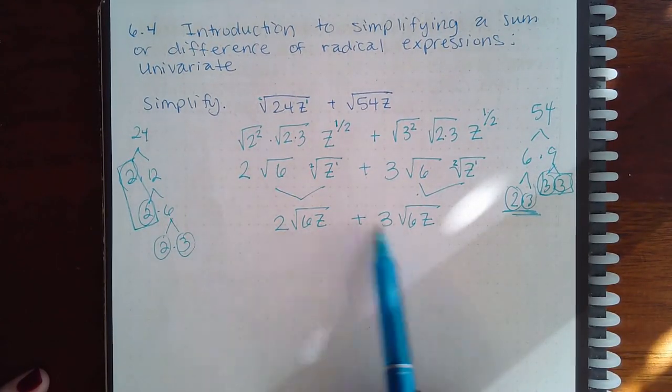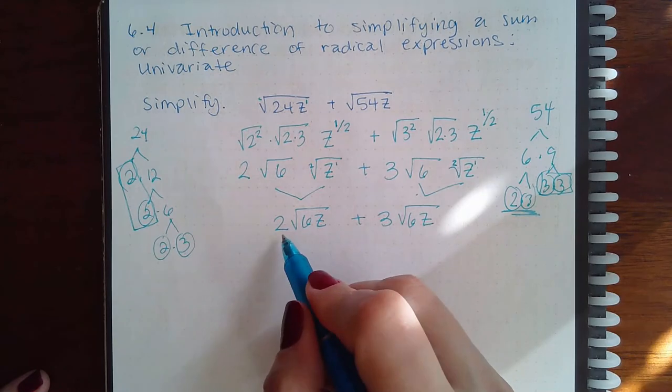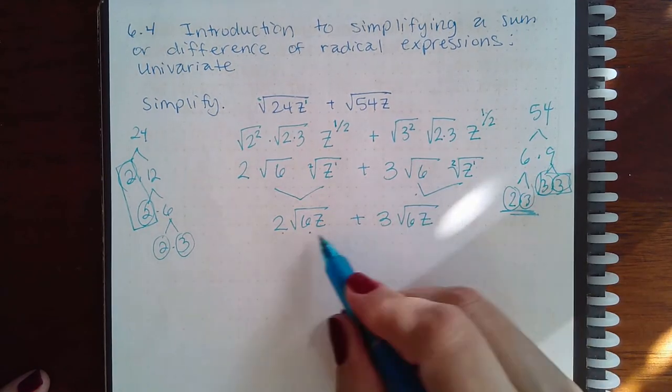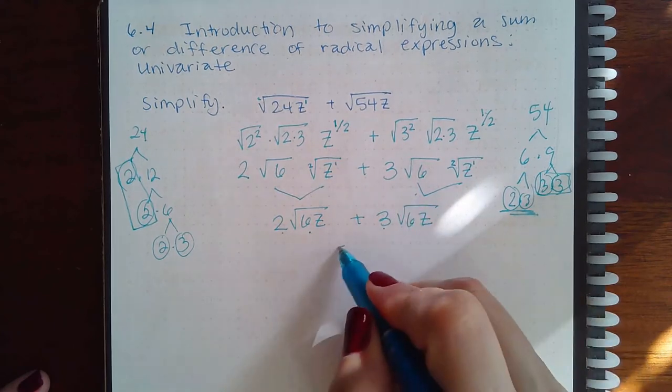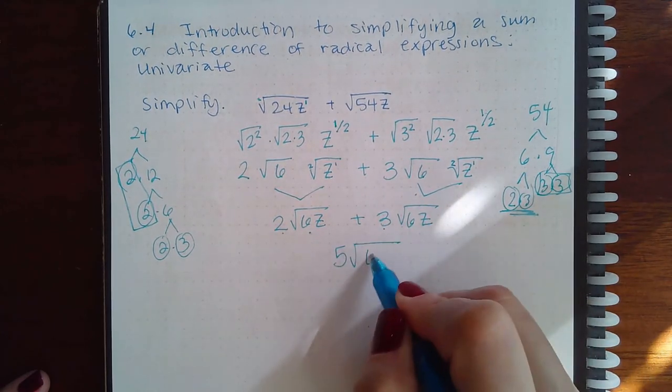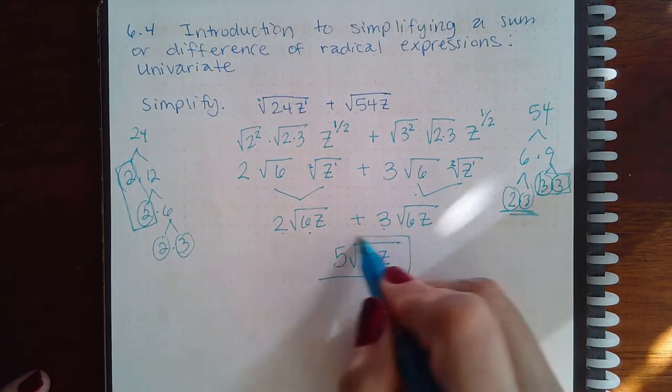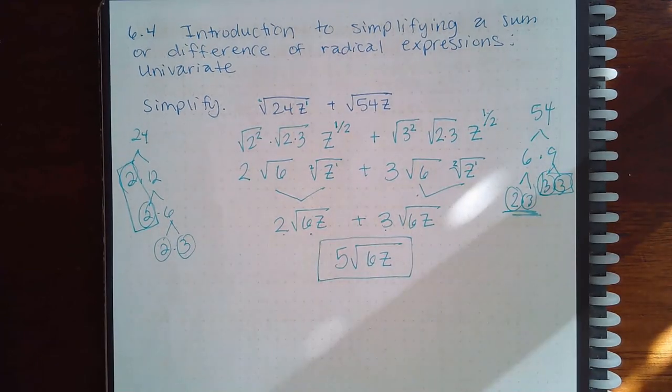So because they're like terms now, I have 2 square root of 6z's, plus 3 more square root of 6z's, which means I have a total of 5 square root of 6z's. And that is the final answer.